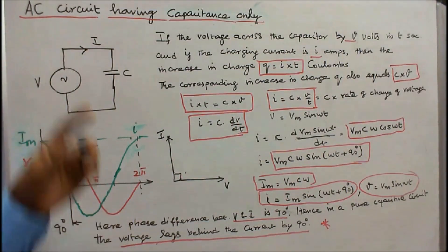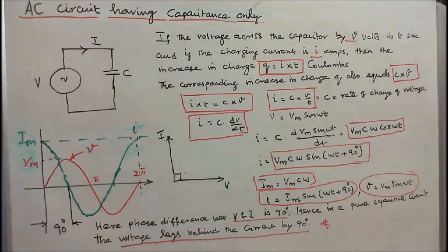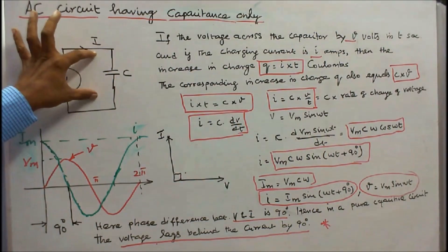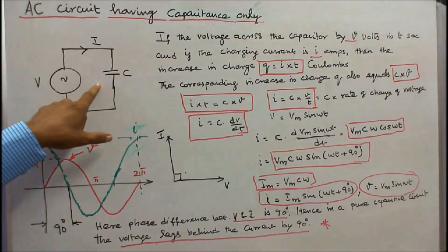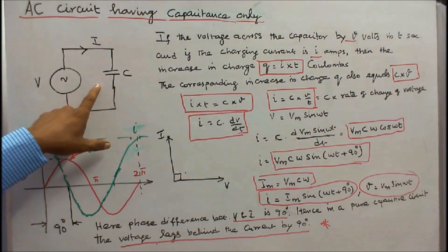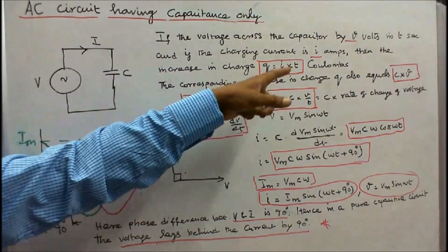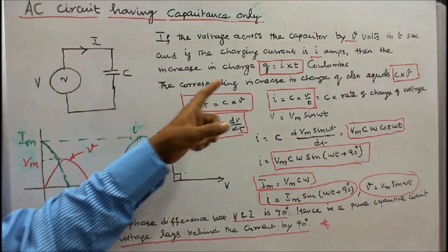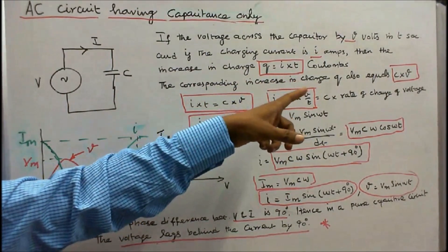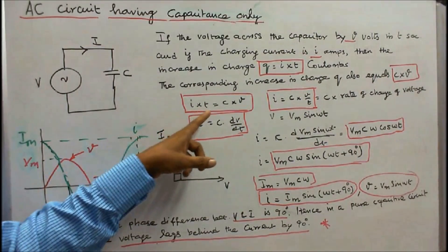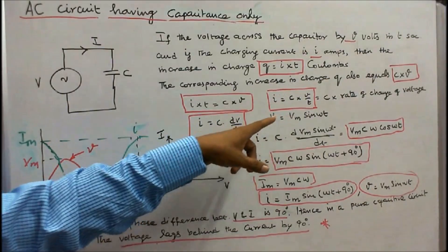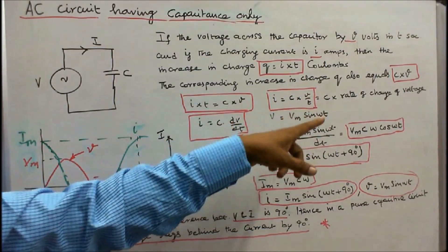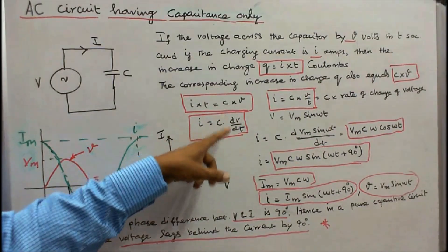Third is AC circuit having capacitance only. Connecting a capacitor across a voltage source, if the voltage across the capacitor is V volts in t seconds and the charging current is I amps, then the increase in charge Q equals I × t coulombs. The corresponding increase in charge Q also equals C × V. Therefore I × t = C × V, giving I = C × V/t, which equals C × (dV/dt).